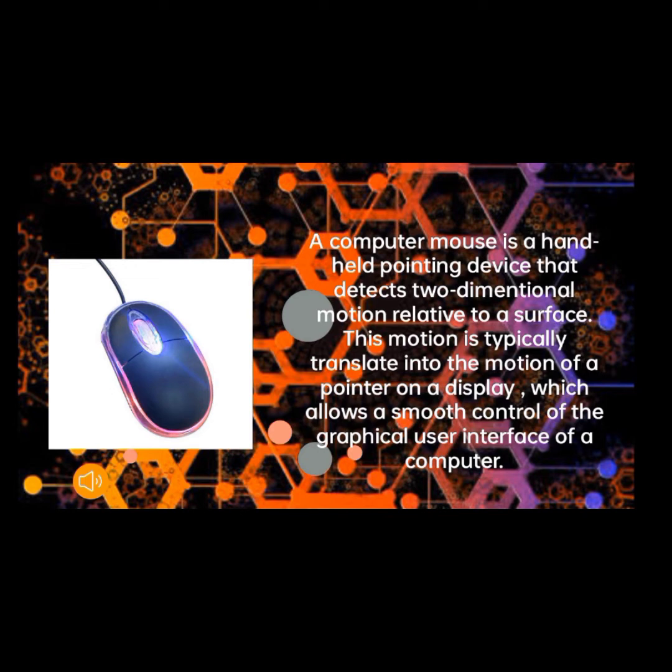A computer mouse is a hand-held pointing device that detects two-dimensional motion relative to a surface. This motion is typically translated into the motion of a pointer on a display, which allows us to control the graphical user interface of a computer.